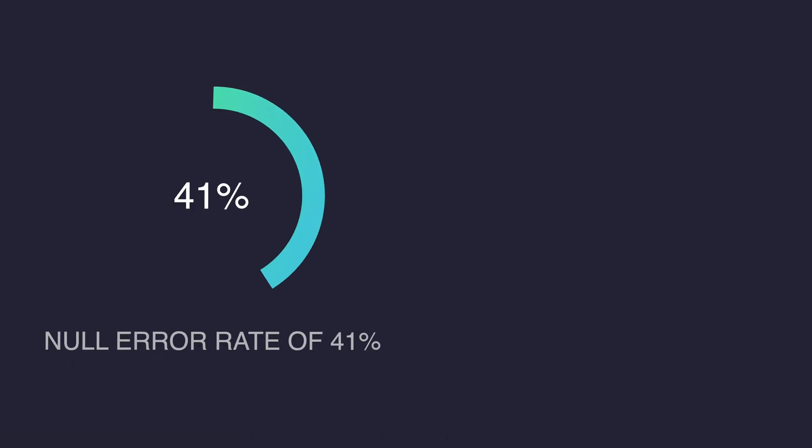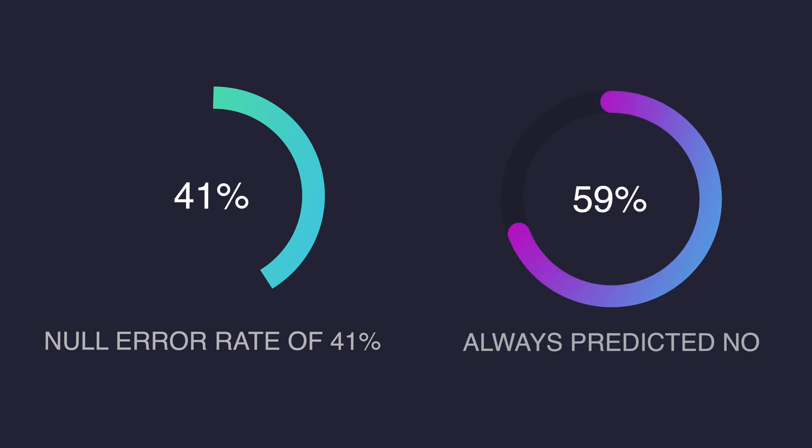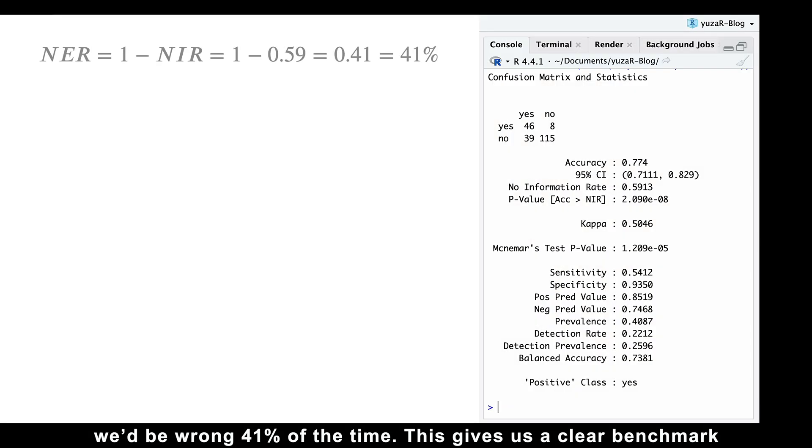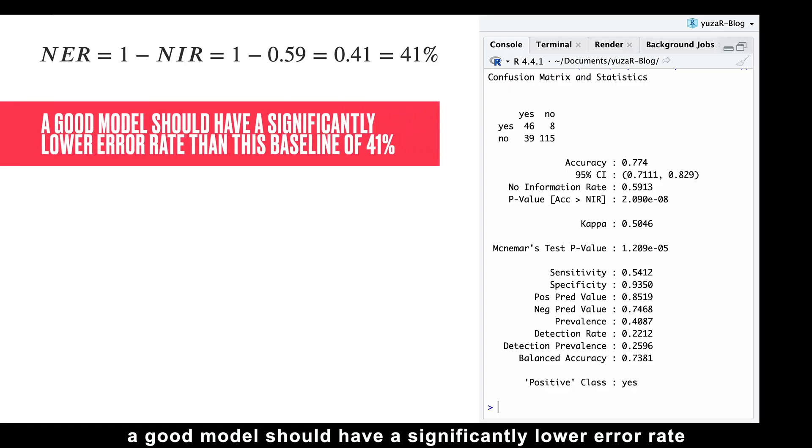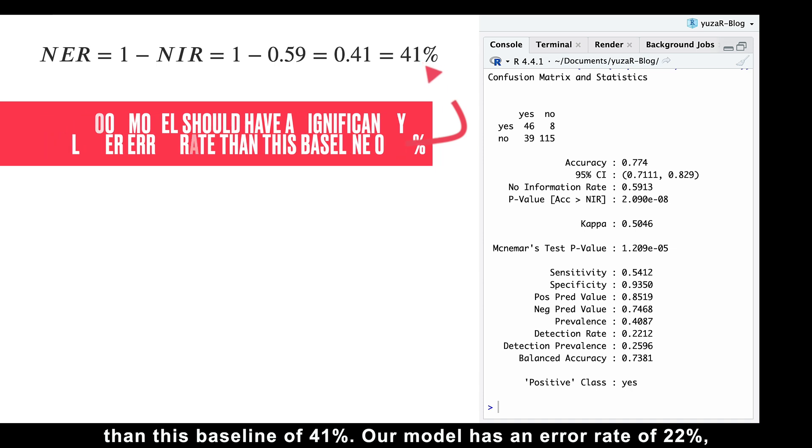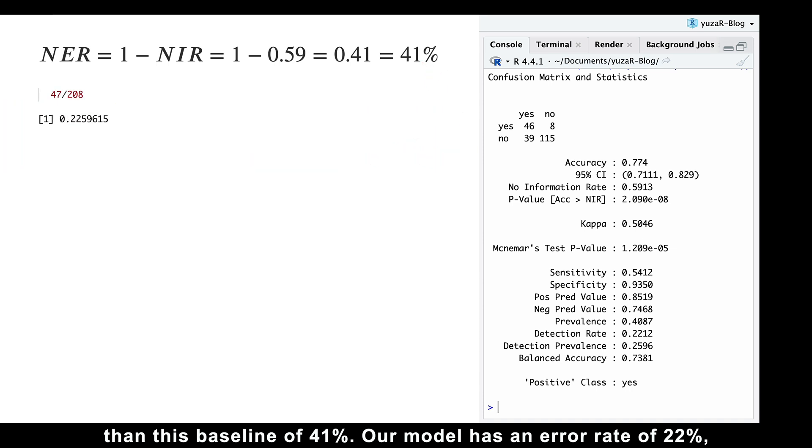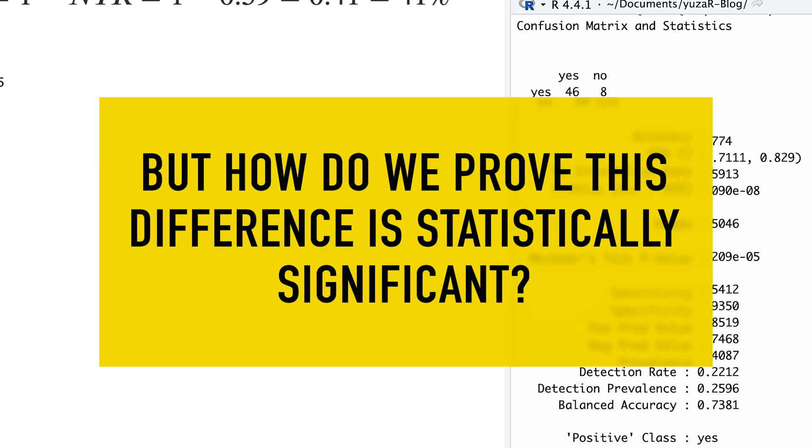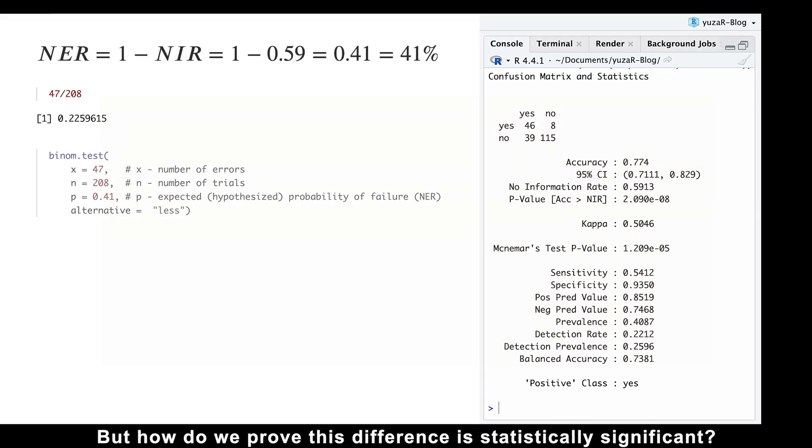A null error rate of 41% means that if we always predicted the majority class, we'd be wrong 41% of the time. This gives us a clear benchmark to evaluate our model's performance. And here is why. A good model should have a significantly lower error rate than this baseline of 41%. Our model has an error rate of 22%, much lower than the 41% null error rate. But how do we prove this difference is statistically significant?